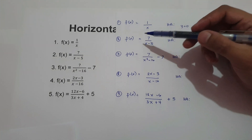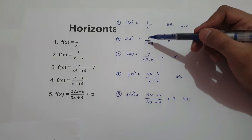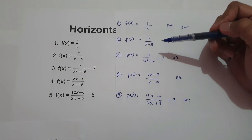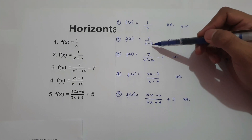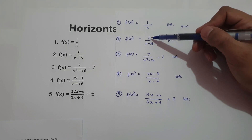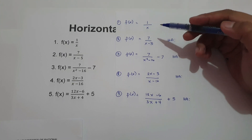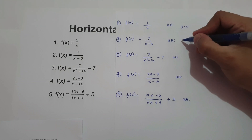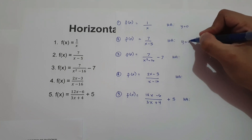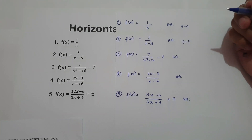On number two, f of x equals 7 over x minus 5. Just like in number one, we do not have a variable on the numerator. Then our horizontal asymptote is zero.